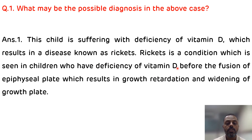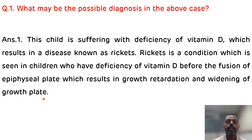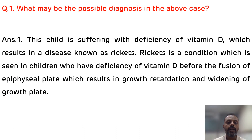Vitamin D deficiency before the fusion of the epiphyseal plate results in growth retardation and widening of the growth plate. This deficiency of vitamin D occurs due to various reasons: reduced intake, decreased synthesis of vitamin D, increased urinary loss of vitamin D, or resistance to 1,25-dihydroxycholecalciferol. This condition is very common in India, particularly in poor socioeconomic status, affecting young children from 4 to 6 years of age.